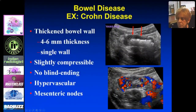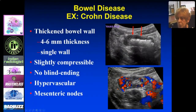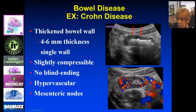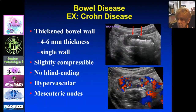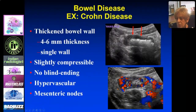Crohn's disease, or even infection, simply presents as thick-walled bowel. One layer of the bowel measures greater than 3 millimeters, which is the normal cutoff — typically between 4 and 6 millimeters in thickness. Both sides are affected, but when we do measurements, we're talking about measuring one wall. It's slightly compressible, it doesn't have a blind ending, and it's hypervascular. Looking for the blind ending is key. You may also see nodes.